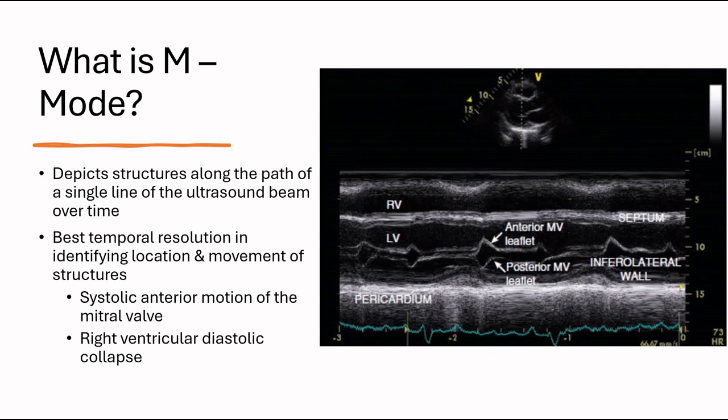What is M-mode? It depicts structures along the path of a single line of the ultrasound beam over time. It gives the best temporal resolution in identifying location and movement of structures. It's really good to look at SAM, or known as systolic anterior motion of the mitral valve, and also right ventricular diastolic collapse to assess for cardiac tamponade.